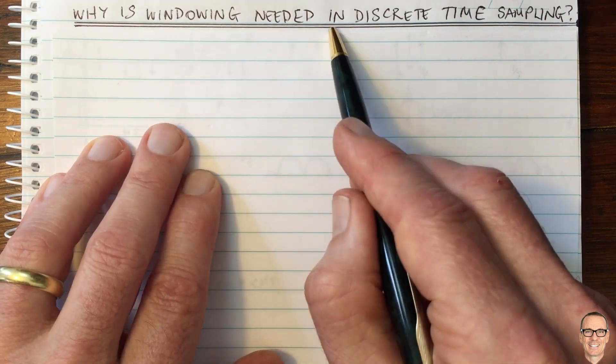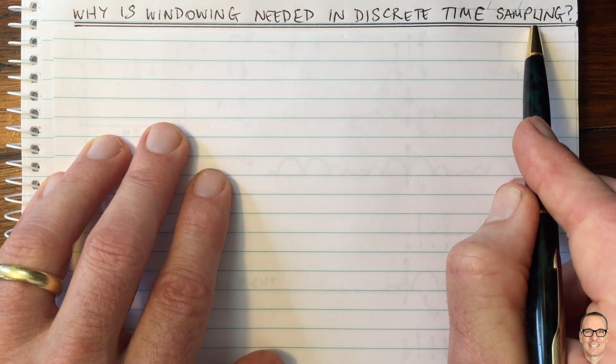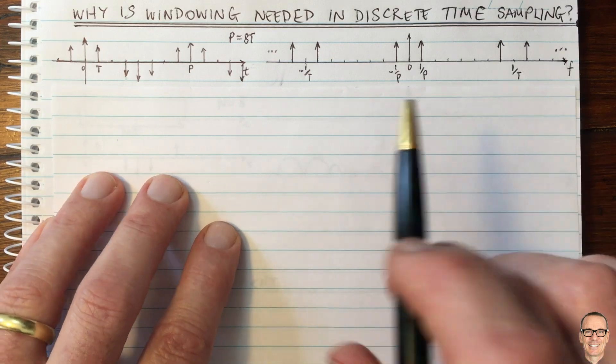Why is windowing needed in discrete time sampling? Well, let's start by thinking about continuous time.